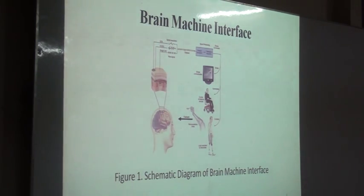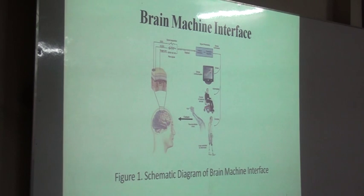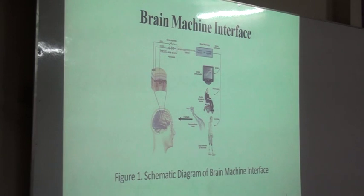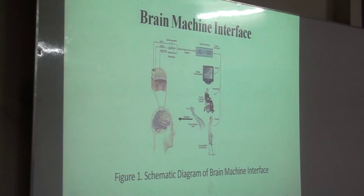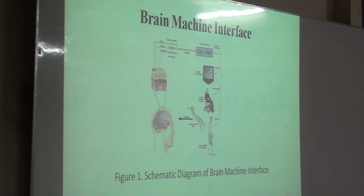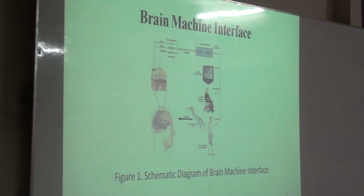Brain signals can be of different types of modalities. For example, it can be electrical signals, which is termed as electroencephalography, or it might be magnetoencephalography or similar. The BMI systems that are already existing are using electroencephalography.